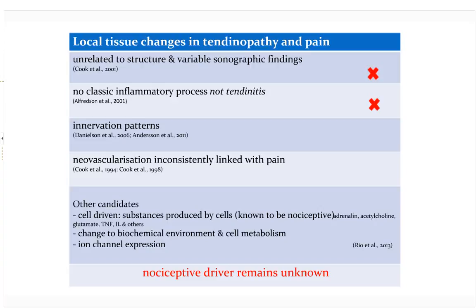In terms of innervation patterns and the new vessels that grow in at end-stage pathology: they are completely inconsistently linked with pain. We know people can have pain in a reactive tendon with no vessels. The nerves that grow in with the vessels are autonomic — responsible for vessel diameter, not sensory. Even when studies have tried to address the neovascularisation, results are really mixed. We wrote a paper in 2013 in Sports Medicine suggesting a few possible nociceptive drivers, but the nociceptive driver remains unknown and we really don't have a local tendon target.